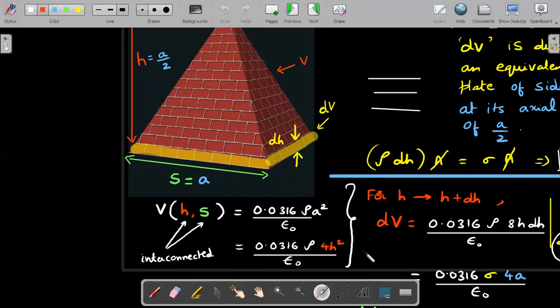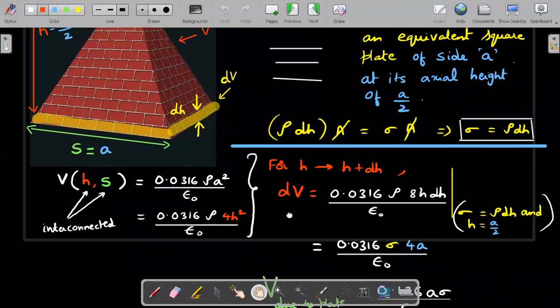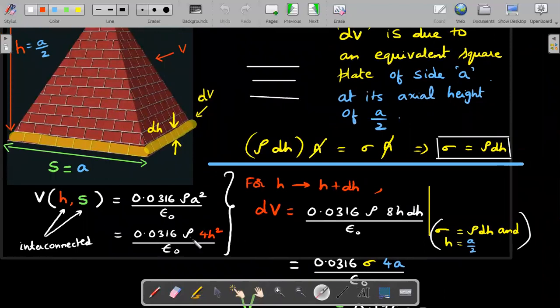Then dV due to a change in dH would be simply differentiating this with respect to H. dV with respect to dH would be written as 8H dH. This dV I would argue is due to that square plate extra that has been added. Only difference is I have to convert ρ to σ. So in this ρ 8H dH, I substitute the value of σ as ρ dH and substitute back the value of H in terms of a because your final answer should be written in terms of a. It's always customary to first differentiate and then substitute the value.